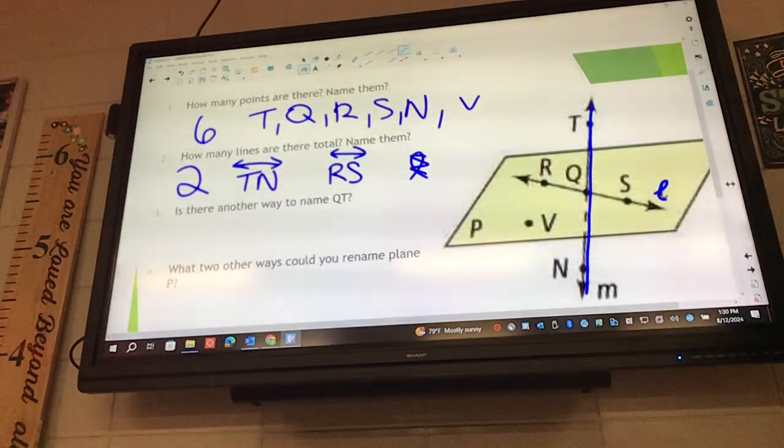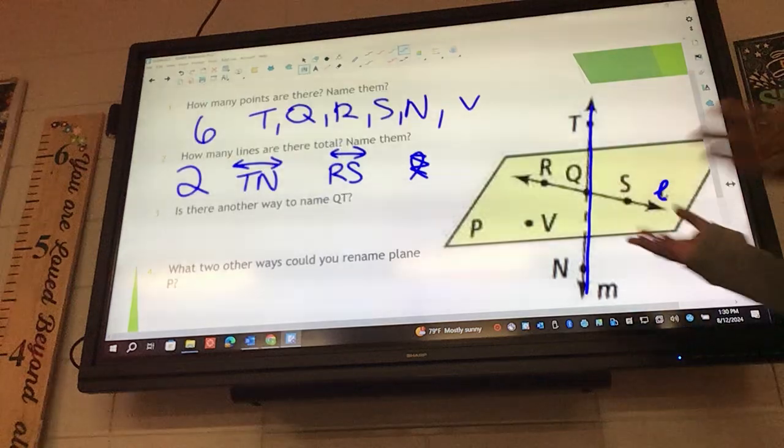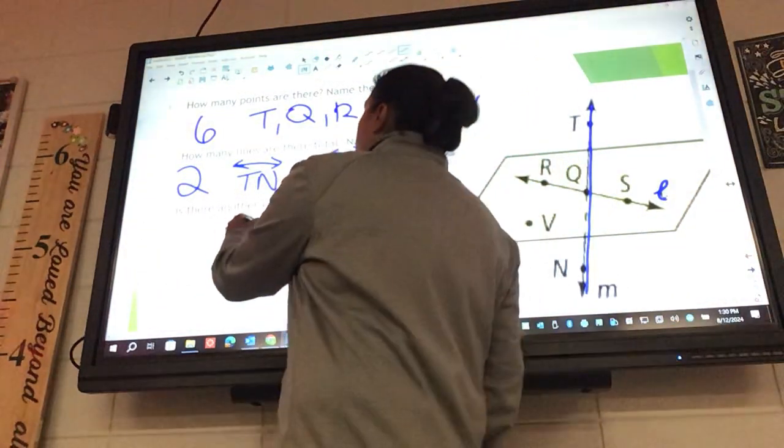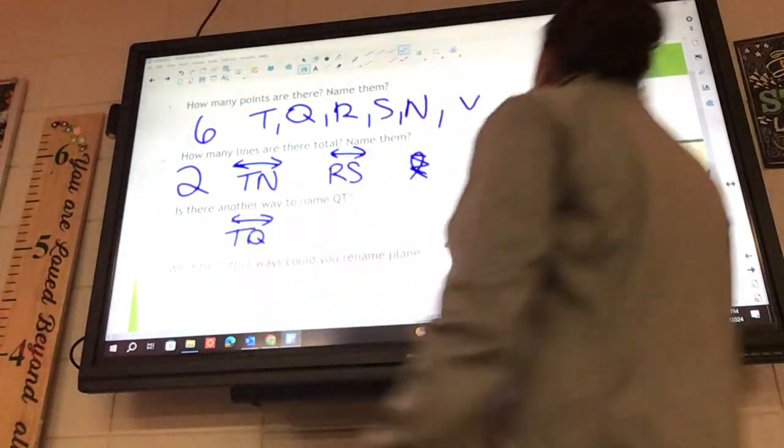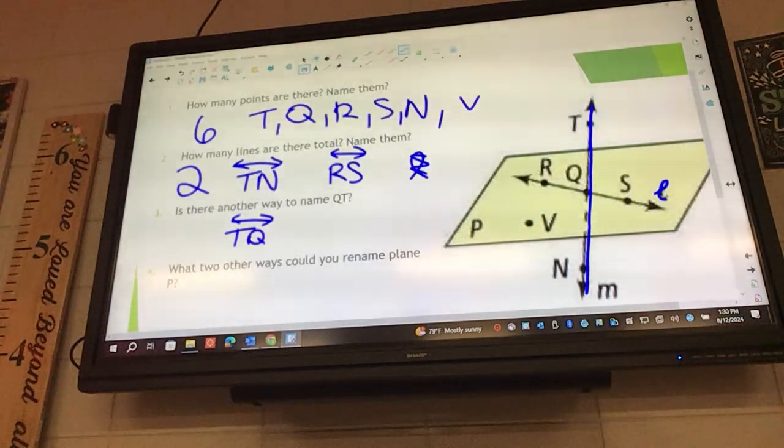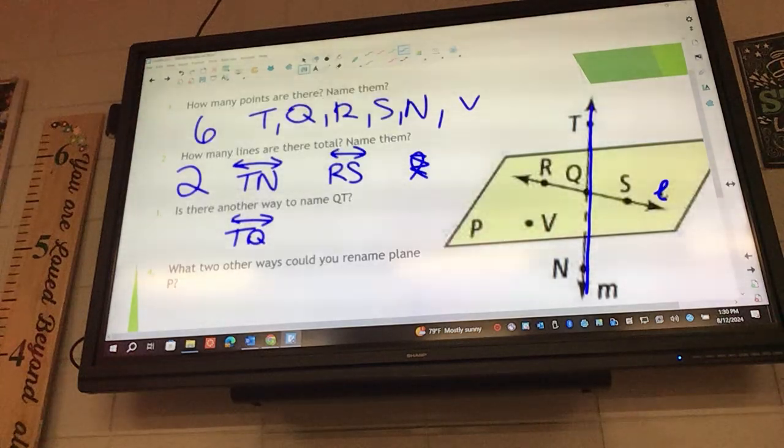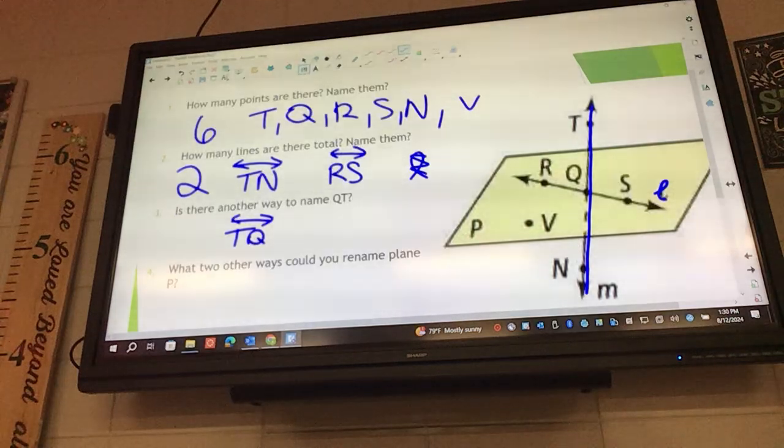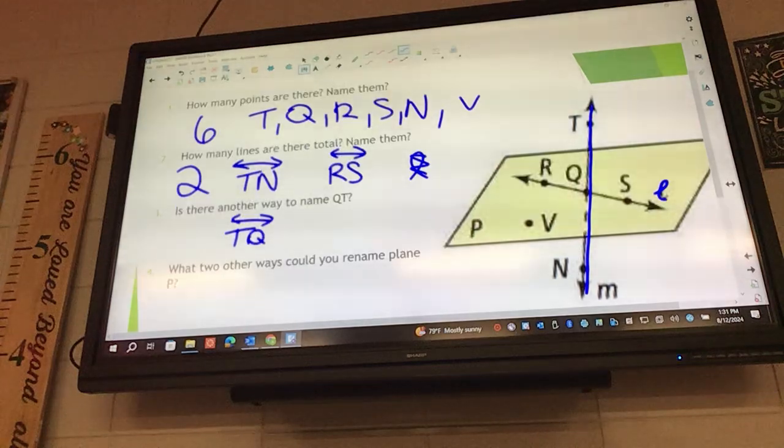Is there another way to name the line QT? Yes. What is it? TQ is the most easy and obvious one. Without even looking at the picture, we definitely know we could do TQ. However, what are some other options? Take a second, find QT on the picture. How could we rename that line? NQ, QN, TN, any of those options. However, when it gives us that QT, the easiest way is to just flip it.